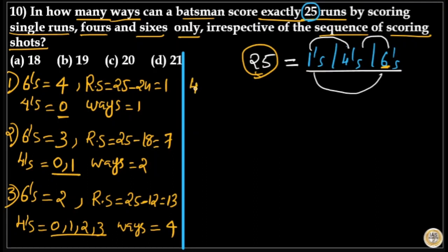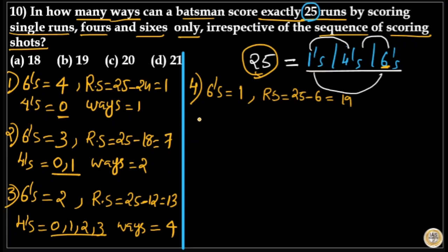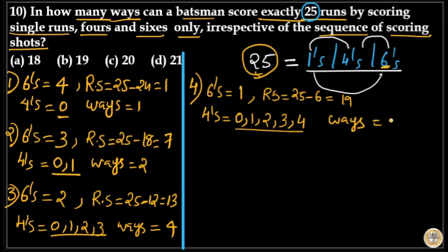In the fourth case, the number of sixes is equal to 1. That means the remaining score is 25 minus 6, which equals 19. The number of fours can be 0, 1, 2, 3, or 4, and that means the number of ways is equal to 5.